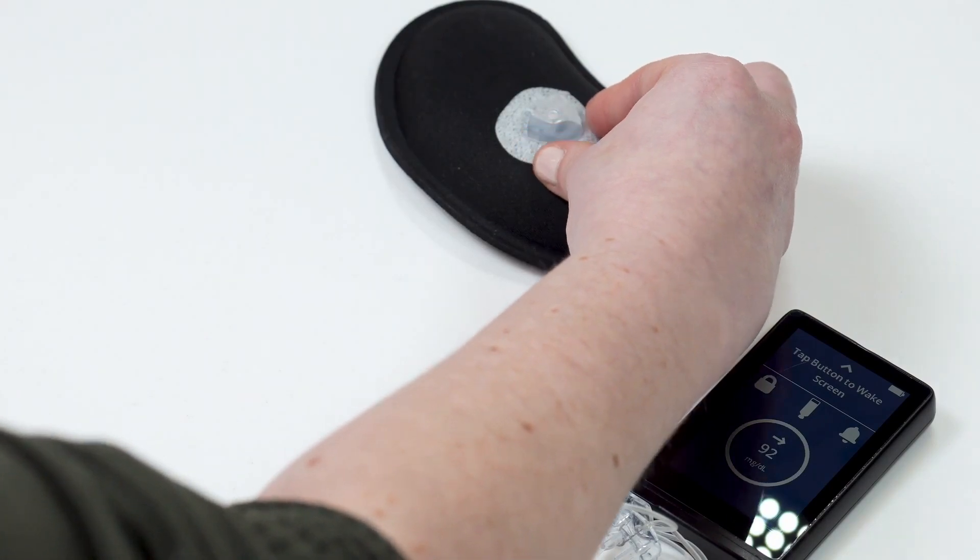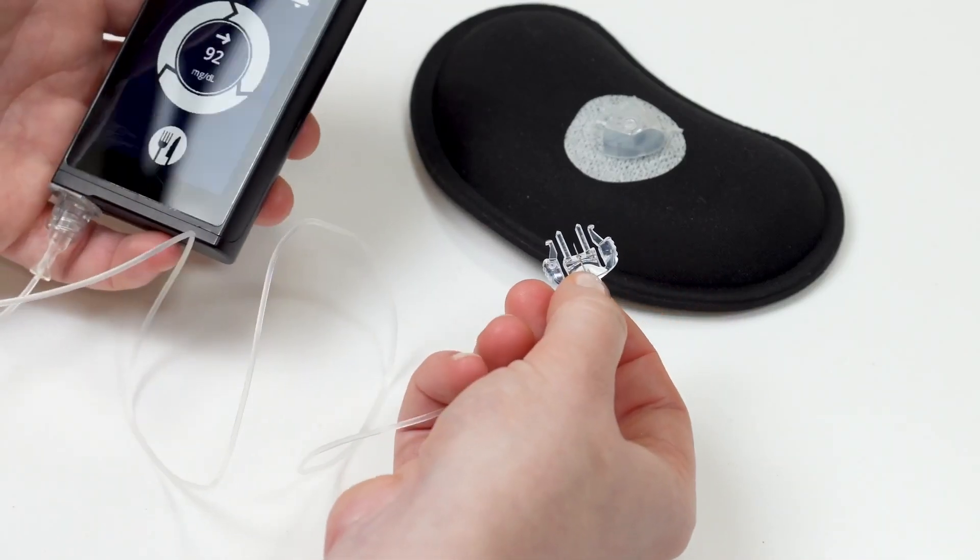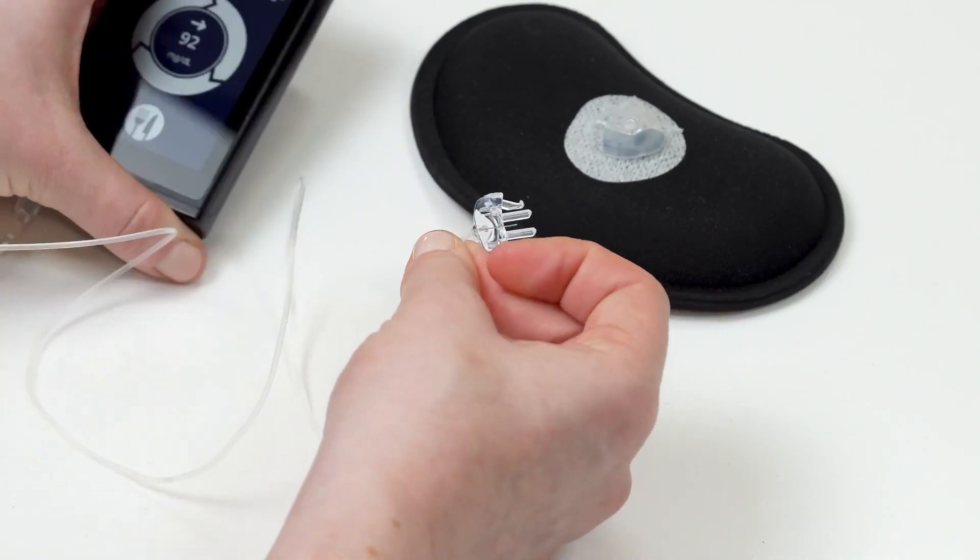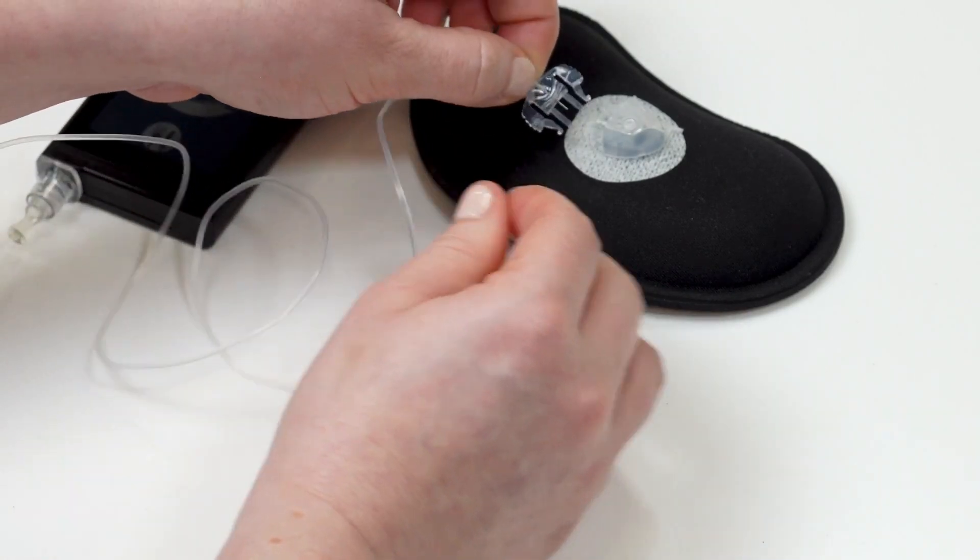Disconnect the tubing from this new infusion set and discard. Take the tubing that is currently connected to your islet and connect this tubing to your new infusion set.